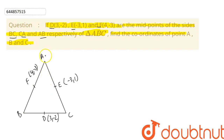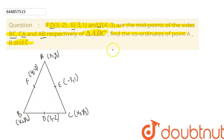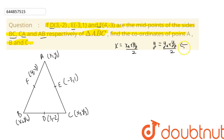Let us say the coordinates of point A are (x1, y1), the coordinates of point B are (x2, y2), and the coordinates of point C are (x3, y3). By using the midpoint theorem, if two points have coordinates (xa, ya) and (xb, yb), then the midpoint x-coordinate is (xa + xb) / 2, and the midpoint y-coordinate is (ya + yb) / 2.